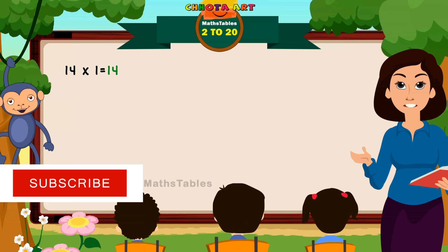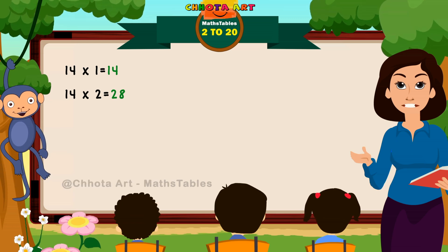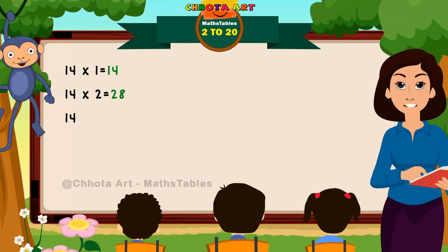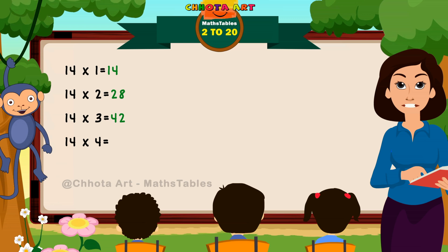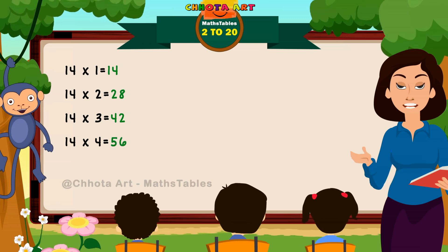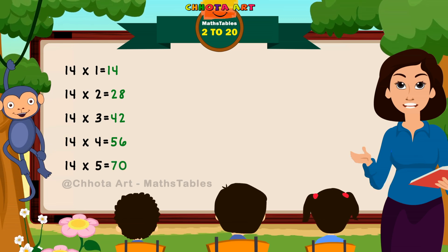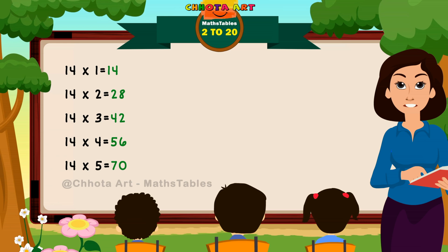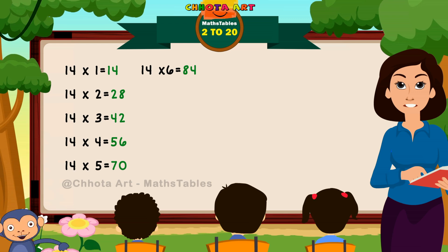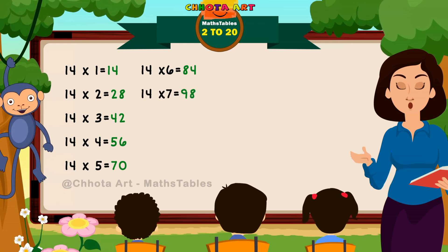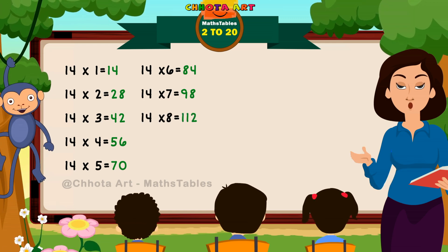14 ones are 14. 14 twos are 28. 14 twos are 28. 14 threes are 42. 14 threes are 42. 14 fours are 56. 14 fives are 70. 14 sixes are 84. 14 sevens are 98. 14 eights are 112.